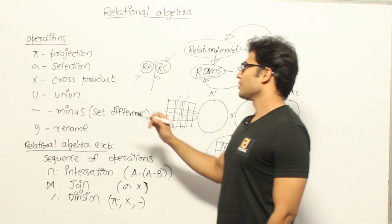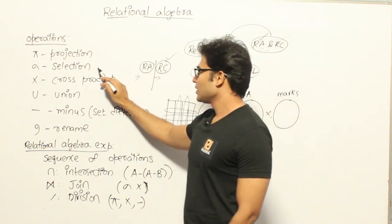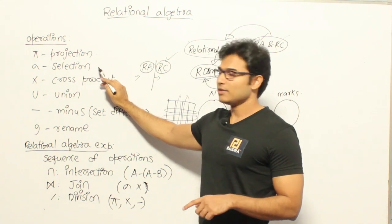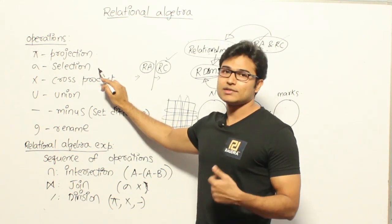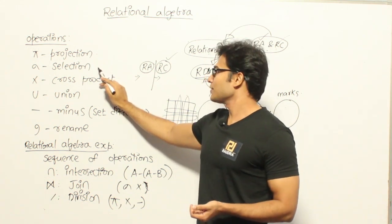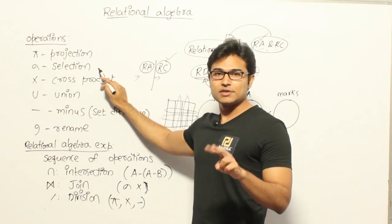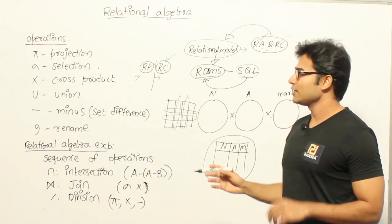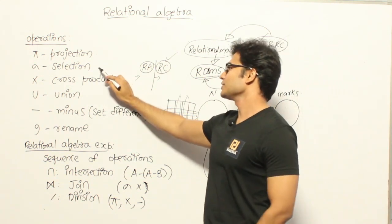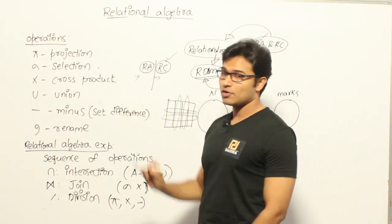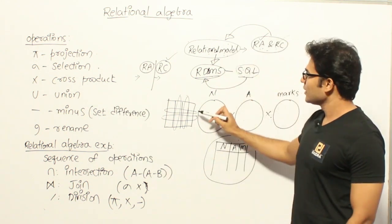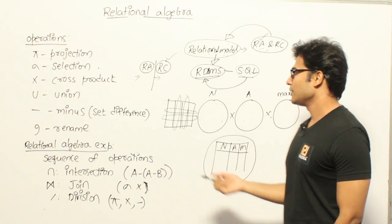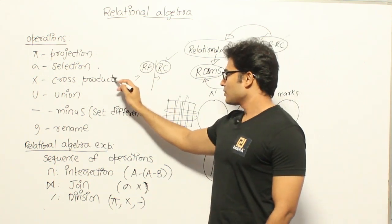Be careful: 'selection' in relational algebra and 'SELECT' in SQL are actually different, even though they have similar names. When we get to SQL I will show you the difference. In relational algebra, selection is an operation used to select some of the tuples from the table.